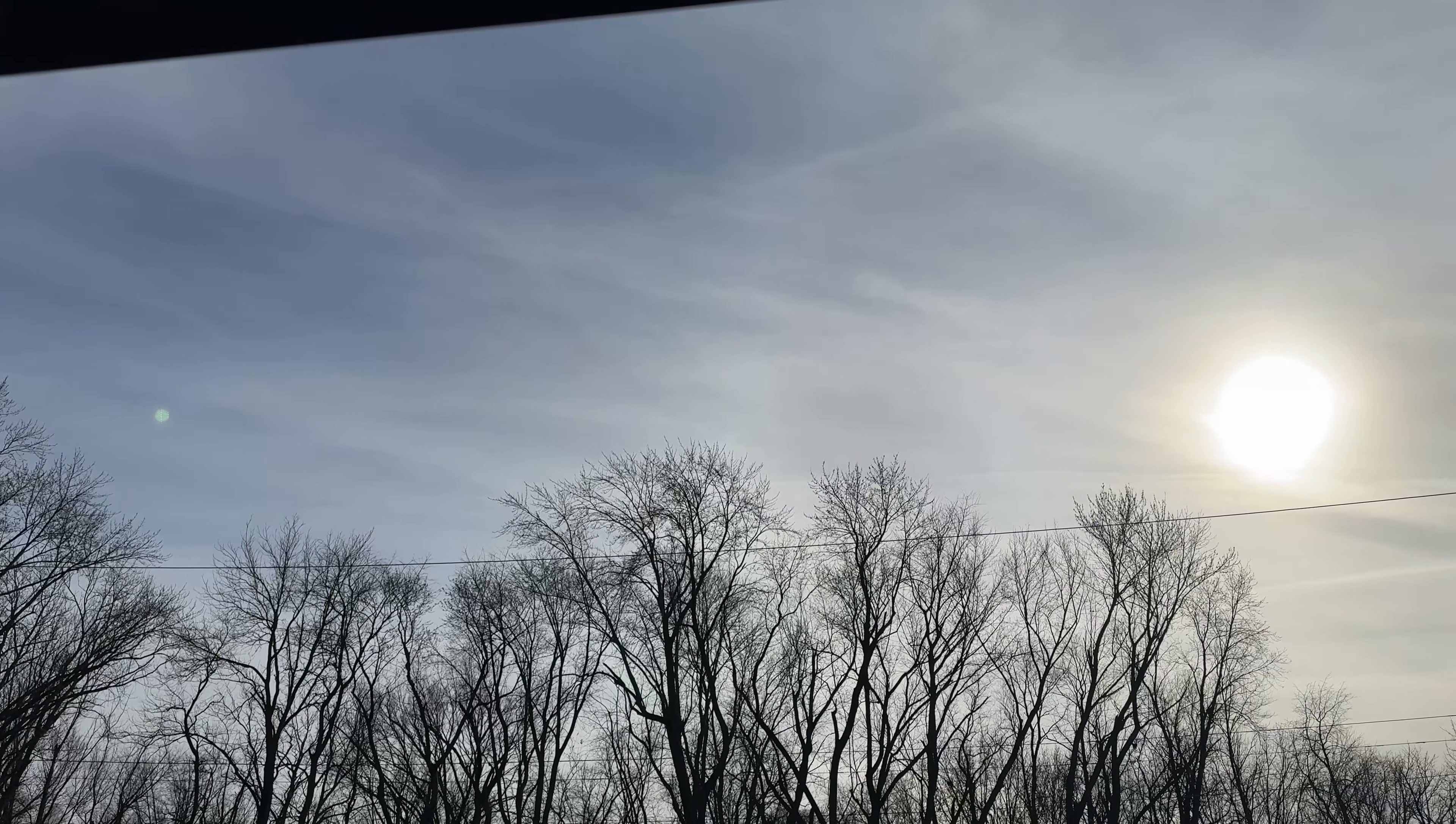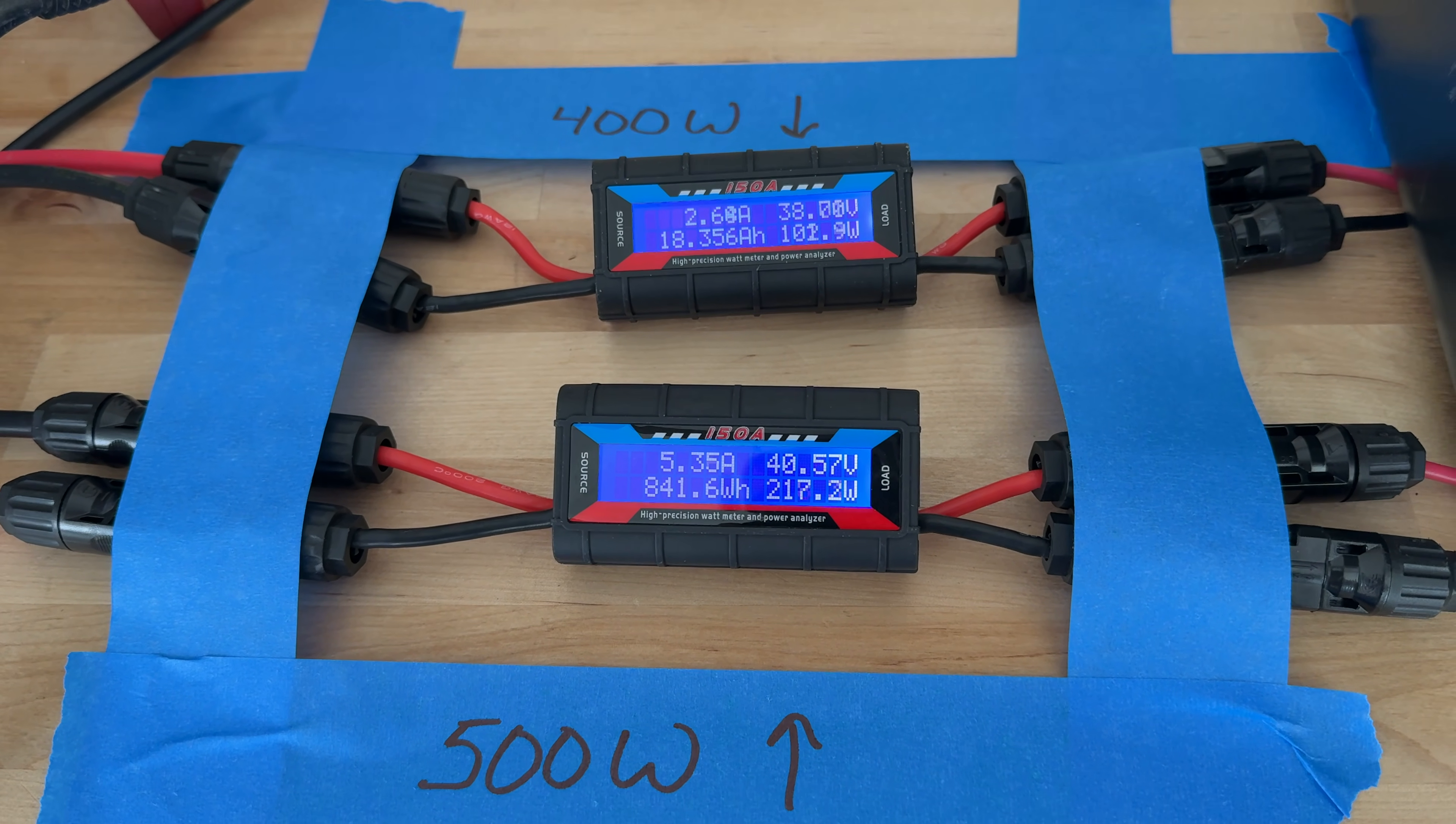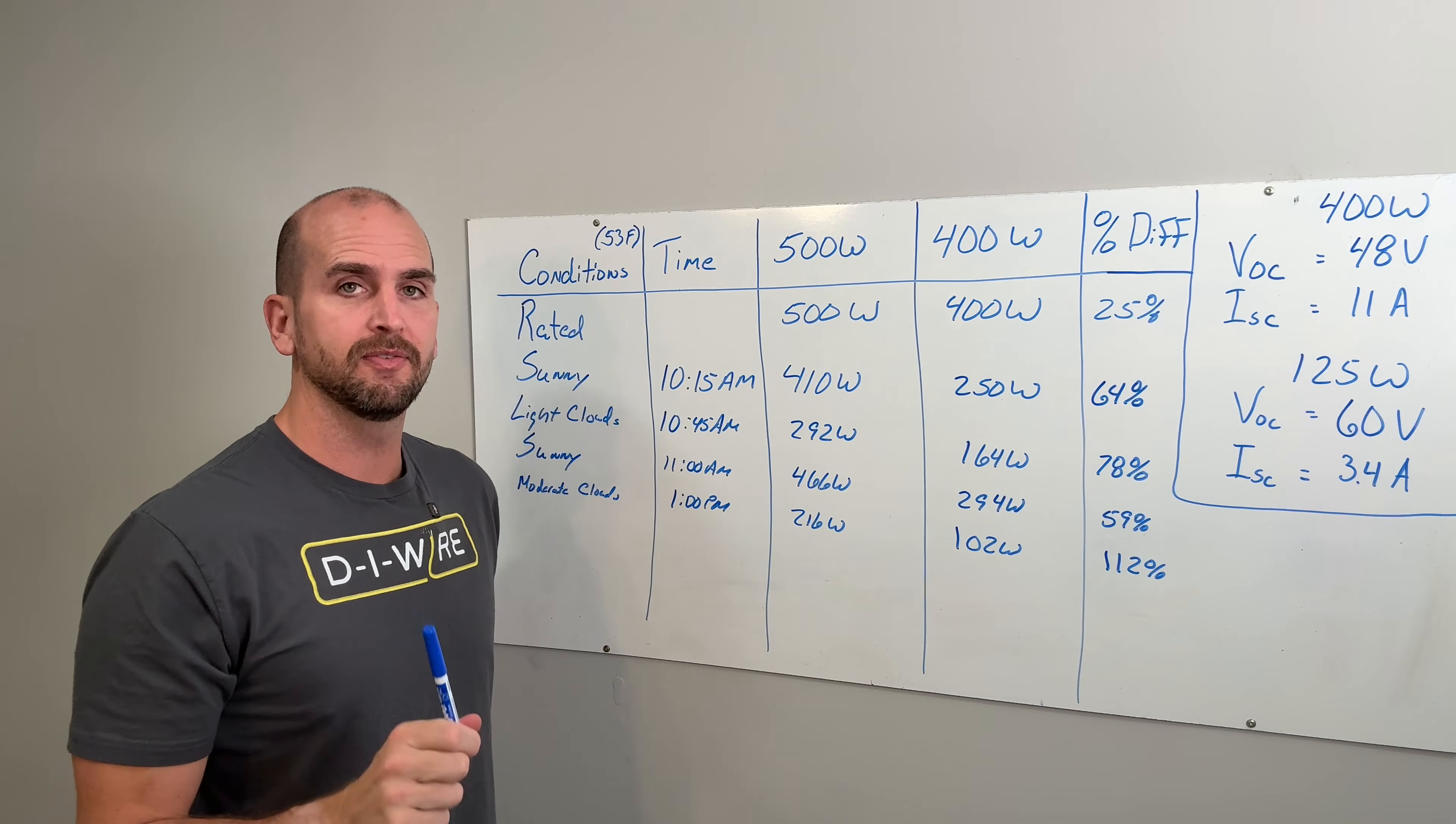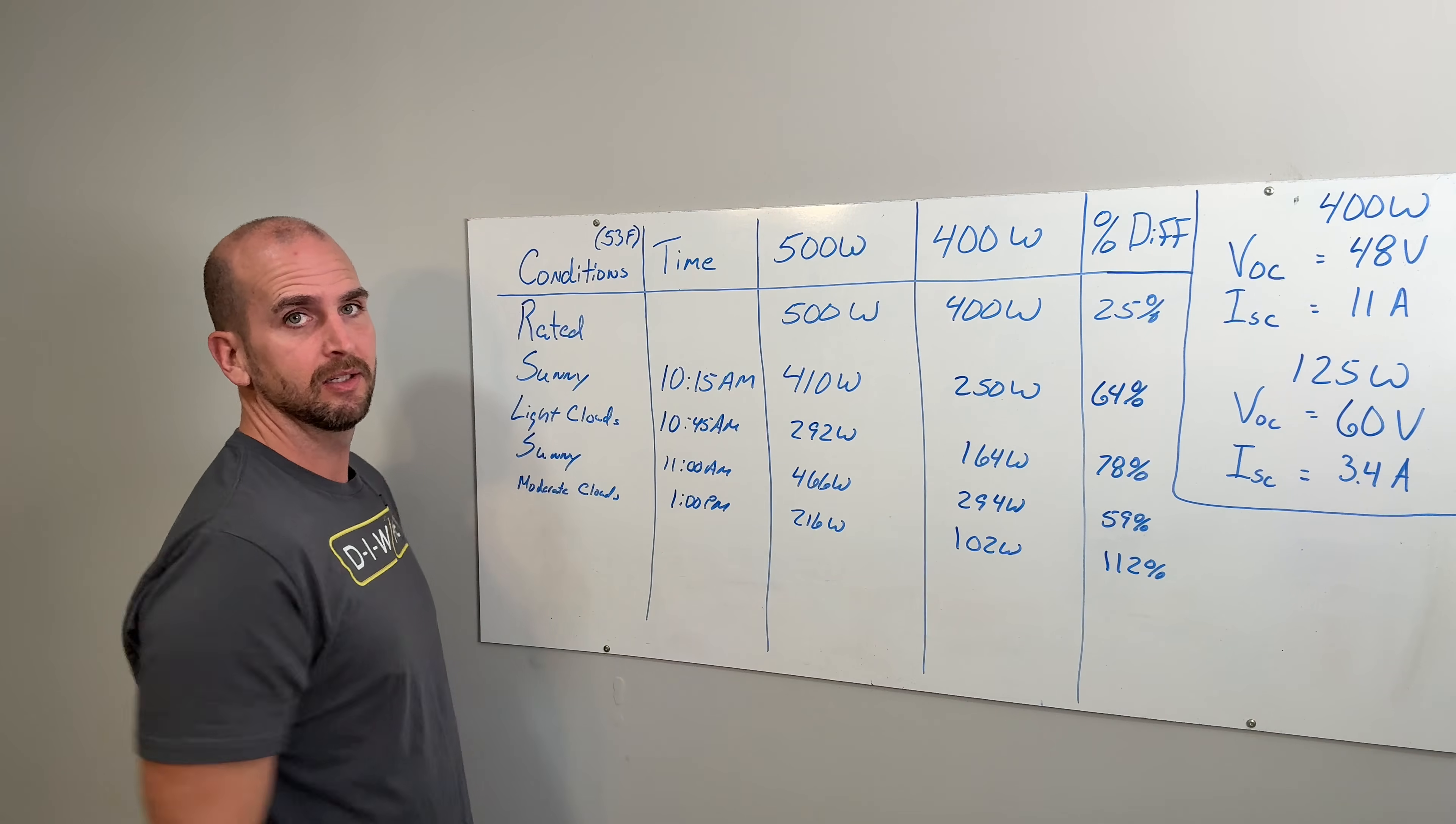This next one was moderate clouds at 1 PM. Out of the 500 watt panel we are seeing 216 watts, and out of our 400 watt panel we are only seeing 102 watts. So that is going to roll up to about 112 percent difference. That is a major difference and you need to consider these things, especially if you're going to be out with your RV in winter months and you know you're going to have a lot of overcast skies. This could be a huge difference in filling up your batteries with these type of panels.